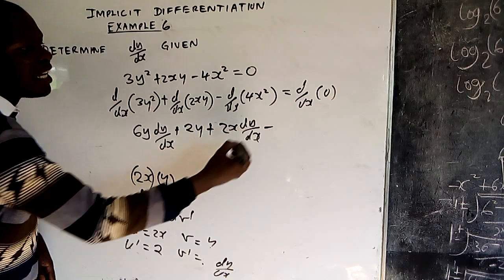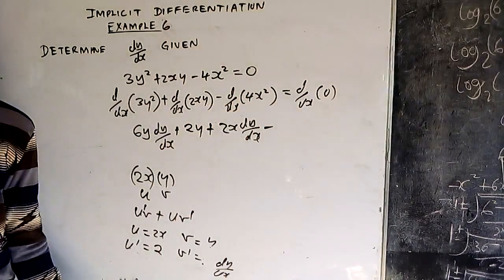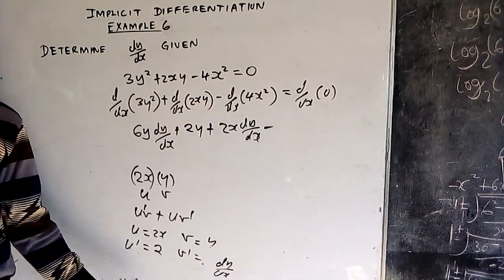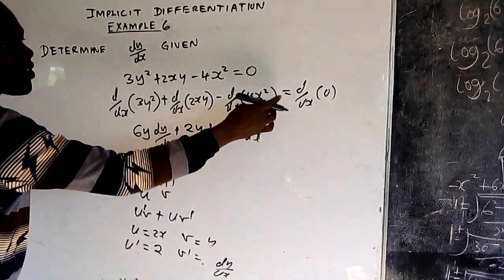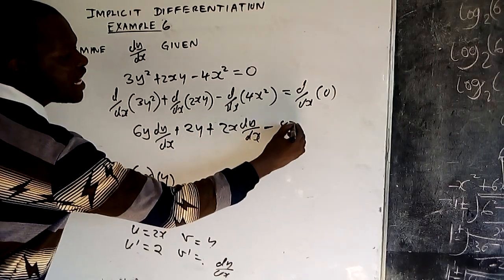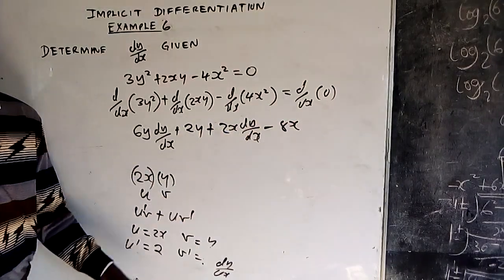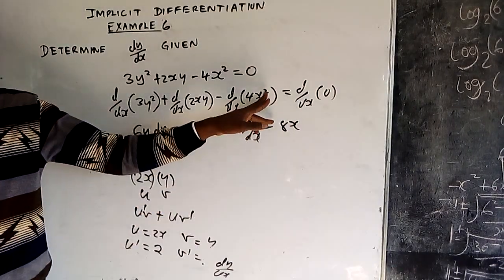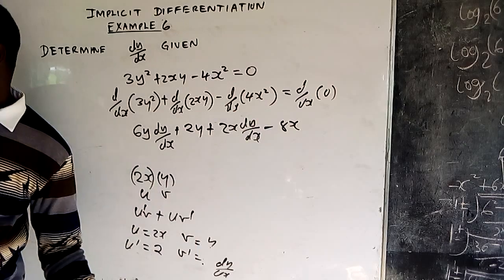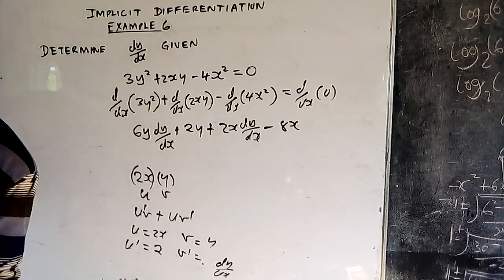Then it is minus 4x². There is no special rule there — you differentiate it directly. If you differentiate 4x², you get 8x. You are differentiating x with respect to x, so you remain with dx/dx.